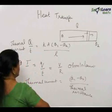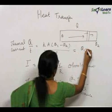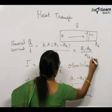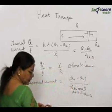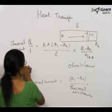Rewrite this equation, keep only the difference in temperature. It will become L by K A. So the term L by K A corresponds to thermal resistance.